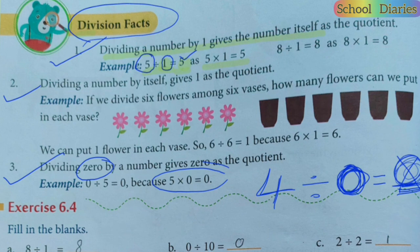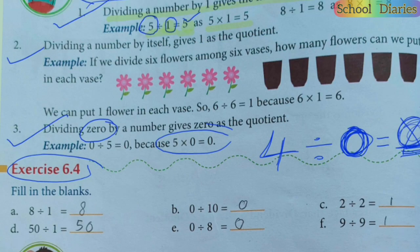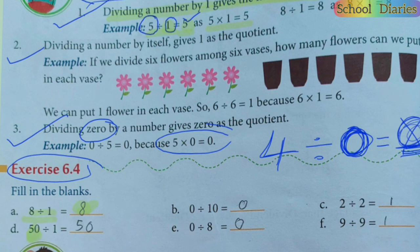Now let's do Exercise 6.4. Number one: eight divided by one — applying Fact Number One, the answer is eight. Next: fifty divided by one — the answer is fifty, that same number. Next: zero divided by one — the answer is zero.